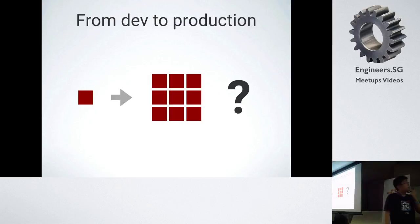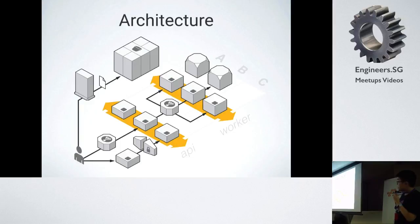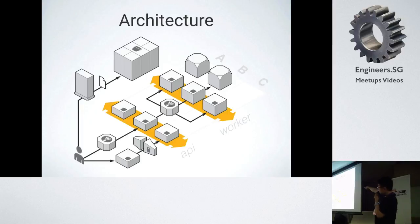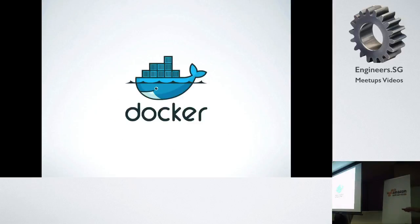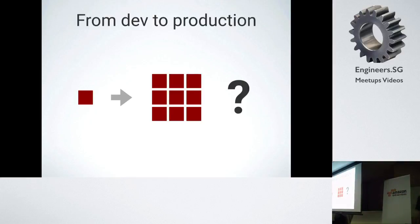Usually in development or staging you have one single host and multiple Docker containers. But in production, as seen from the earlier architecture diagram, you have multiple hosts which have different roles — for example, the service containers in the back and the API hosts in the front. So how do you coordinate your Docker containers across this entire infrastructure?